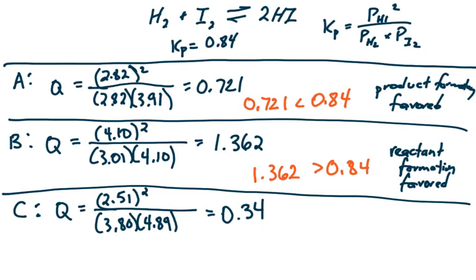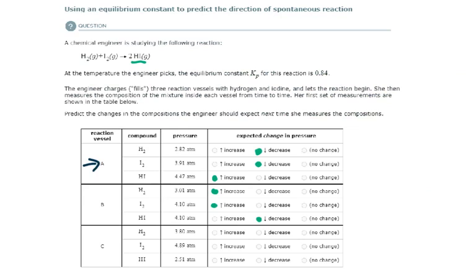And so here, again, I see that Q, or 0.34, is less than 0.84. And so product formation is favored in this reaction vessel, just like it was in A. So we should see an increase here and a decrease here.